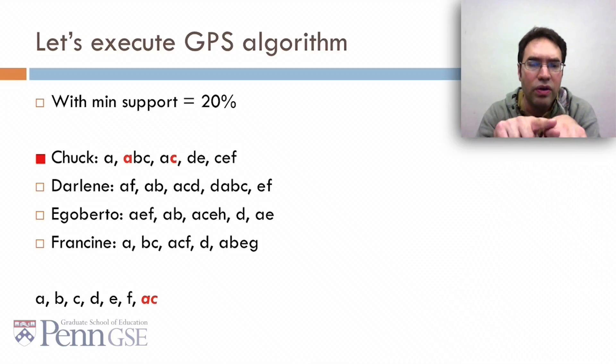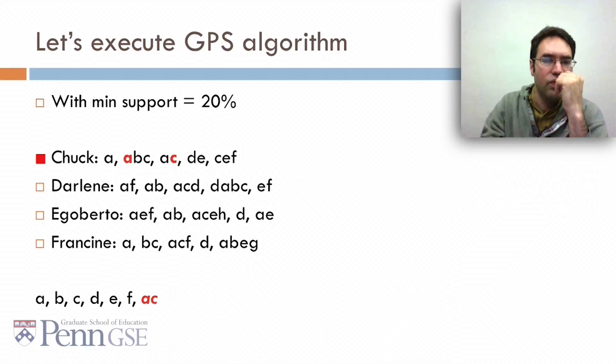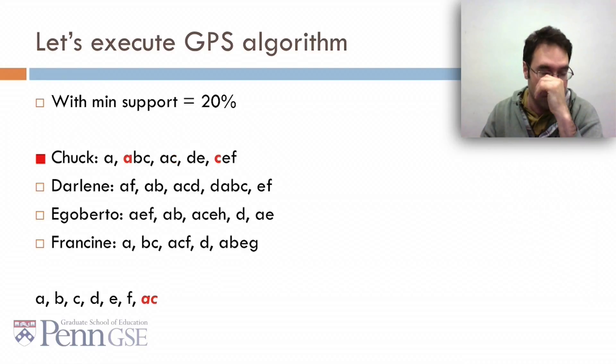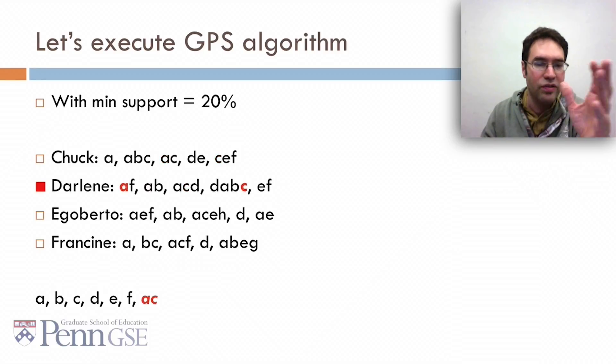Notice we don't count A to C when A and C occur at the same time, because that's not a temporal pattern. We're looking at the second A to the third C, the second A to the last C, the third A to the last C, and so on.